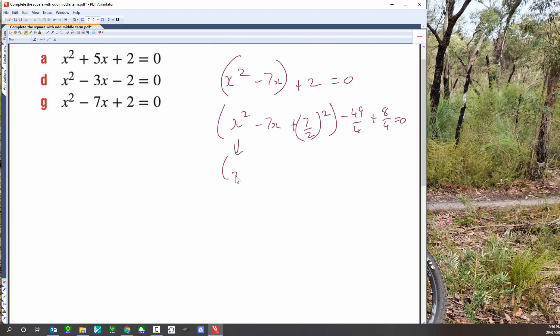x take away base all squared. Take away 41 over 4 equals 0. Let's add that to both sides. x take 7 on 2 all squared equals 41 on 4. Let's root both sides, noting that the answer will be plus or minus. And we've got x take 7 on 2 equals plus or minus root 41 over 2. x is equal to plus or minus root 41 over 2 plus 7 on 2.